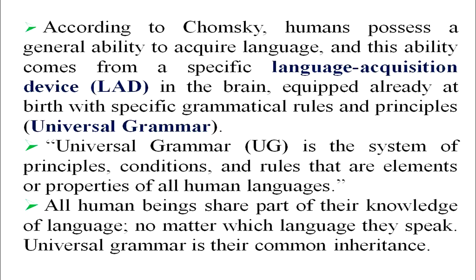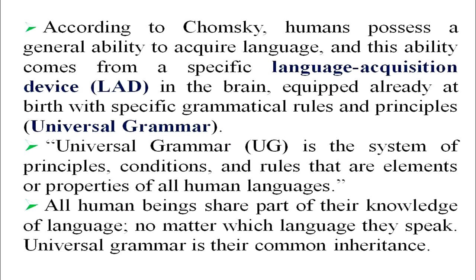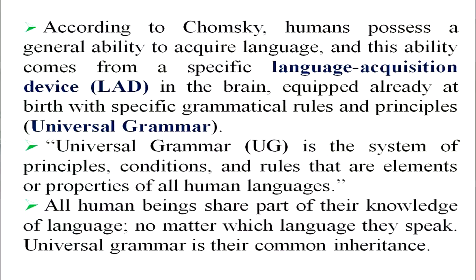A linguist called Noam Chomsky specified that humans have a Language Acquisition Device in the brain. Every human being is equipped with this system, meaning every human has an inborn capacity to learn language — not a particular language, but language in general. He also said there is a system called Universal Grammar, which is innate and common to all human languages.